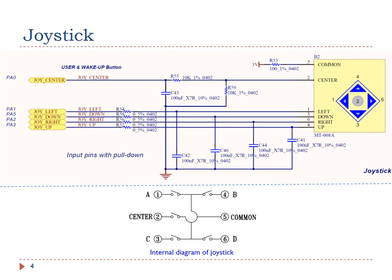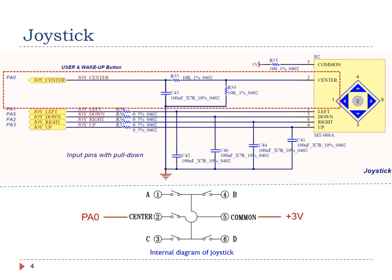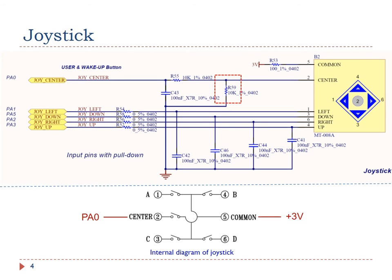Here is the internal diagram of the joystick. It has five switches. The common terminal is connected to the positive 3 volts. In this lecture, we will write a software program to detect whether the center of the joystick is pressed. When the user presses the center, the center switch closes, and pin PA0 is connected to 3 volts. Note that the joystick center terminal is pulled down to ground via a 10K resistor. Therefore, the default voltage on the joystick center terminal is zero. However, the other four joystick terminals are not pulled down.